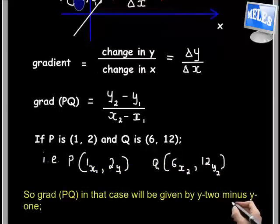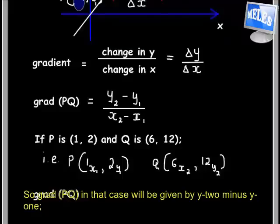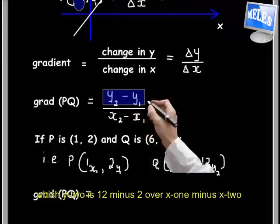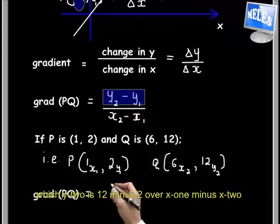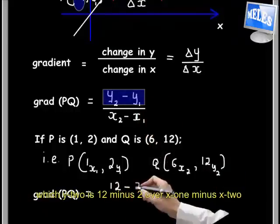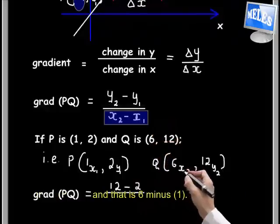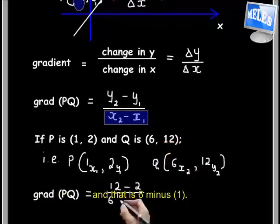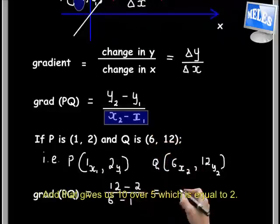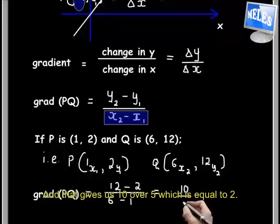So grad(PQ) in that case will be given by y2 minus y1, which is 12 minus 2, over x2 minus x1, which is 6 minus 1. That gives us 10 over 5, which is equal to 2.